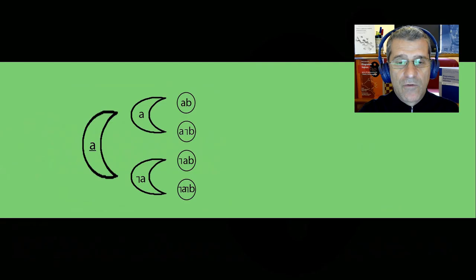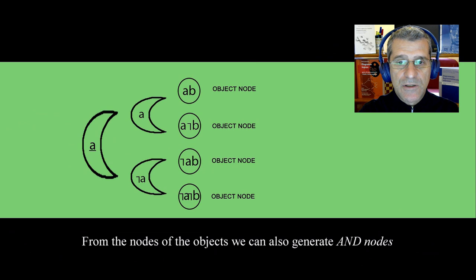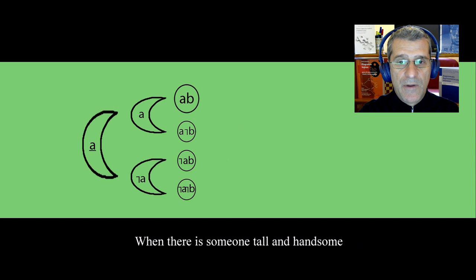From the nodes of the objects, we can also generate AND nodes. When there is someone tall and handsome and there is someone tall and ugly, the AND node A is true.